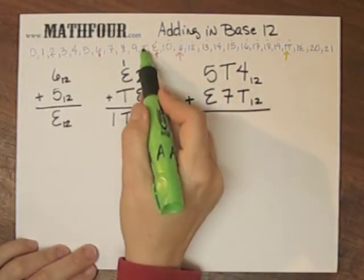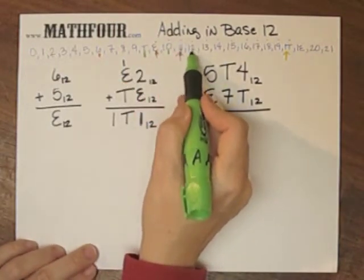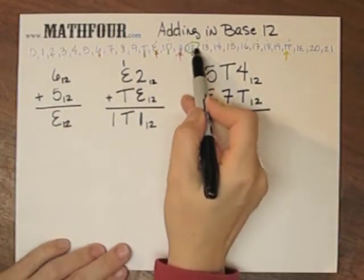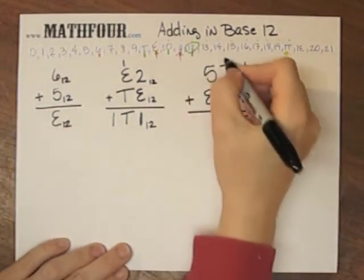1, 2, 3, 4. So I have 12. So I put the 2 down and carry the 1.